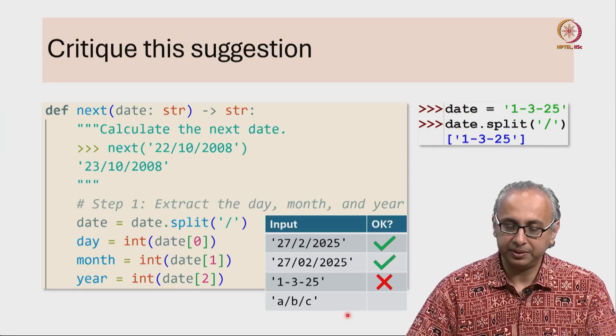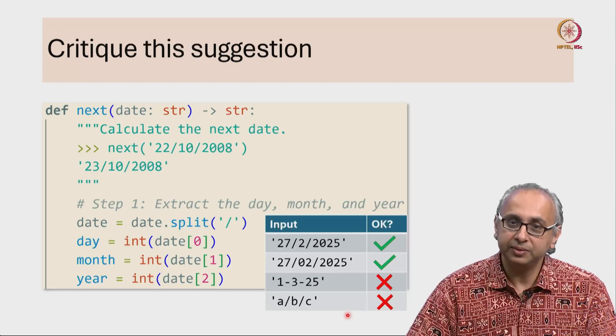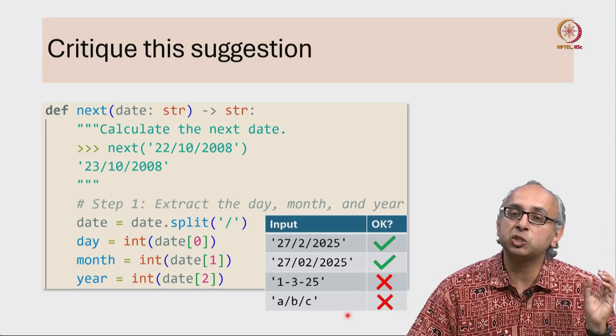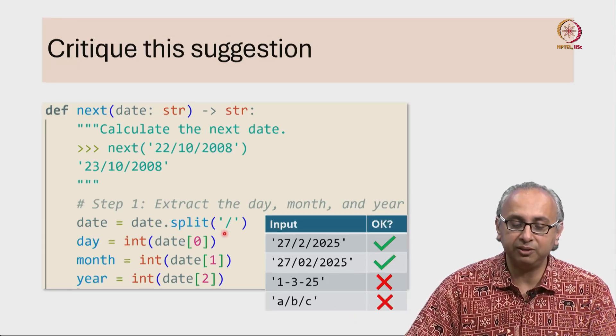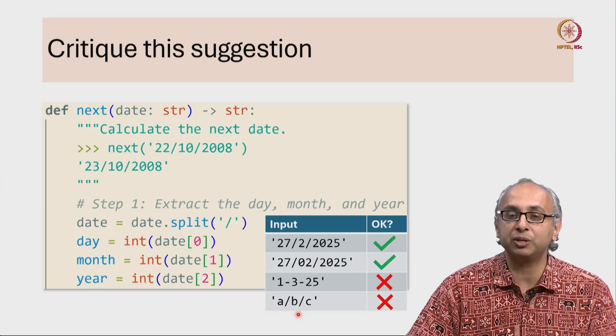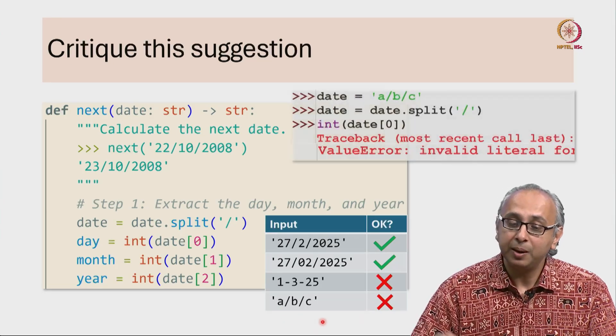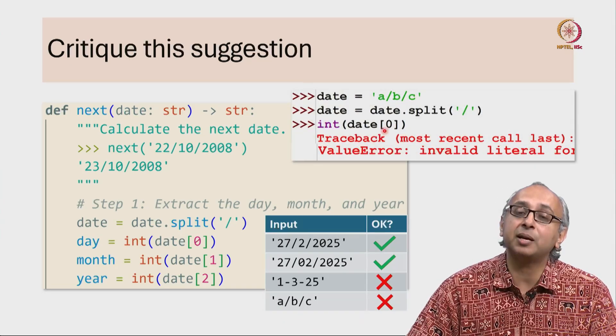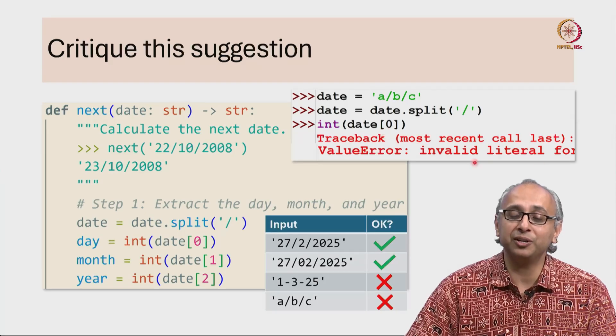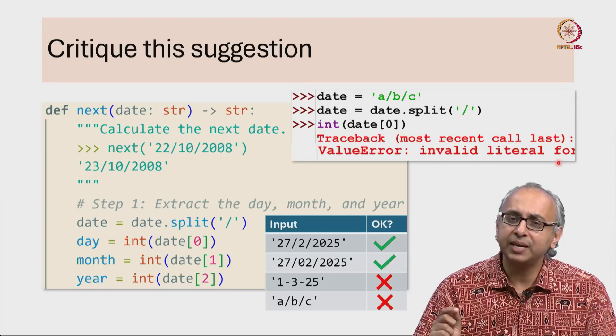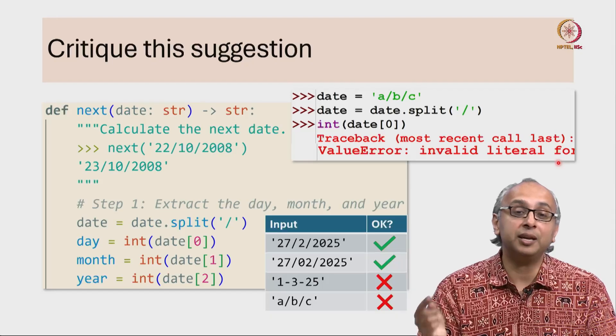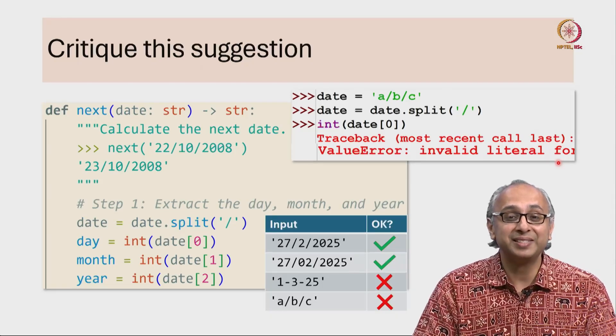Similarly, this example doesn't work either. In this case, when we try to split by slash, we get three values: substring A, substring B, and substring C. But when we try to convert substring A into an integer, that's an error. It will tell us, 'I don't know how to convert A into an integer,' at least in base 10.